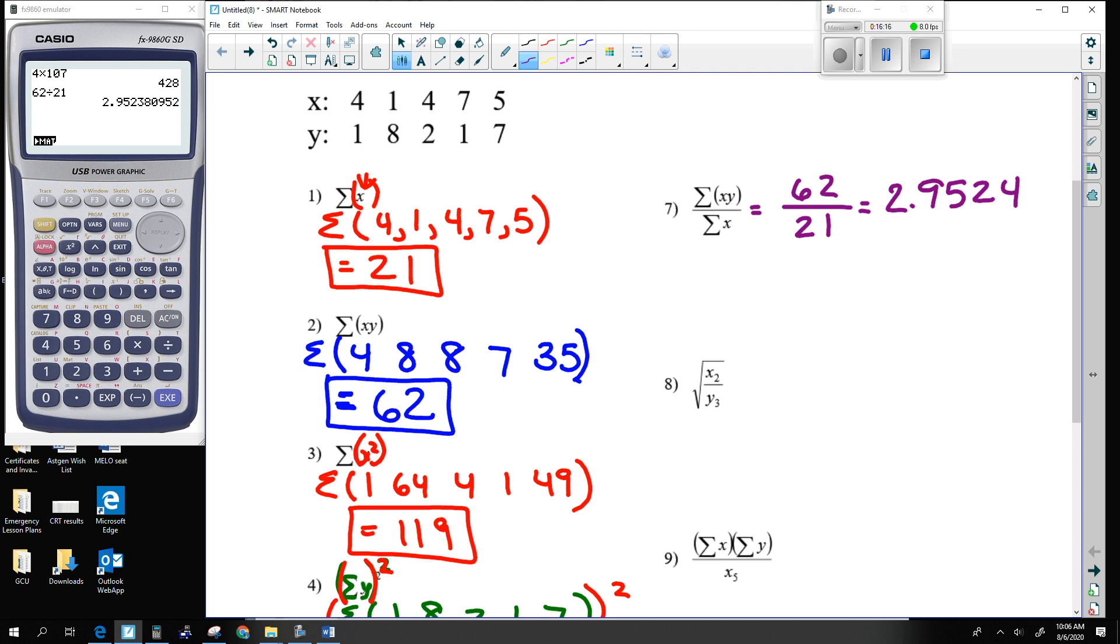Number 8. There aren't any summations. You know what these subscripts are. This is the second X. So looking at the X, X1, X2, X3, X4, X5, this is Y1, Y2, Y3, Y4, Y5 kind of concept. So I see that the X2 is the number 1. The Y3 is the number 2. So this is the square root of 1 divided by 2.